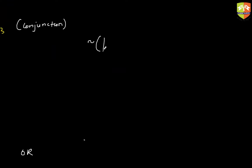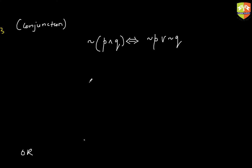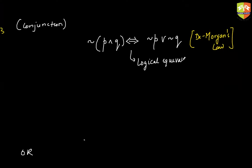Something very important: the negation of a conjunction is basically the disjunction of the negations. This is De Morgan's law. To prove that any two statements are logically equivalent, we just need to show that their truth tables are the same. Let us now build a truth table and verify this.